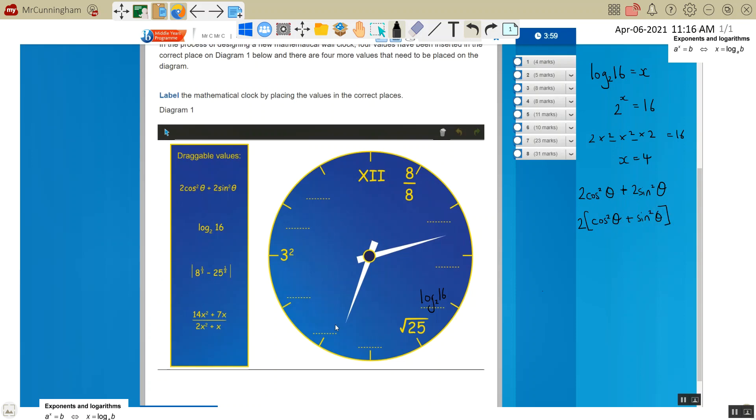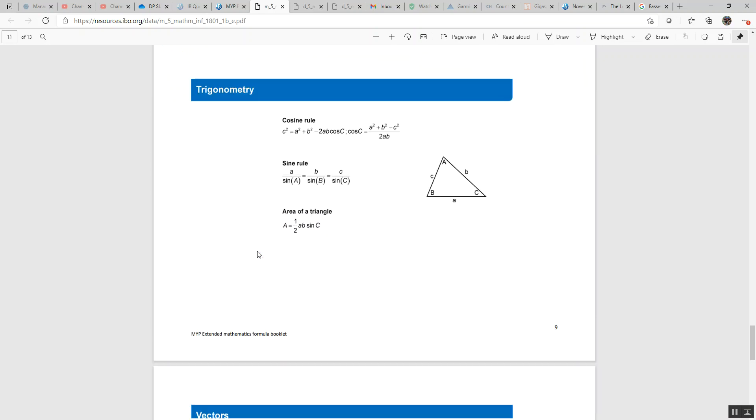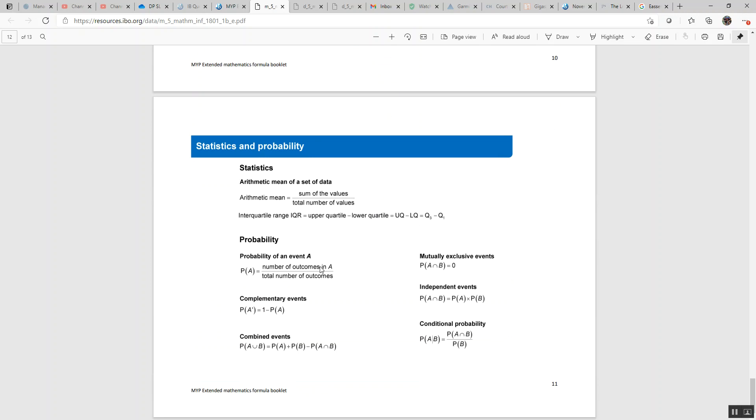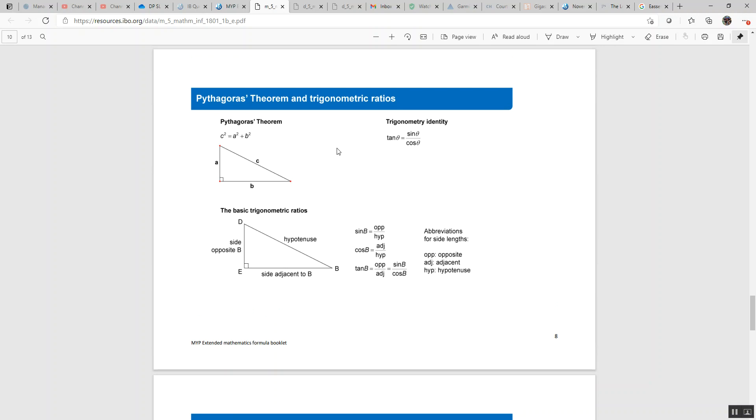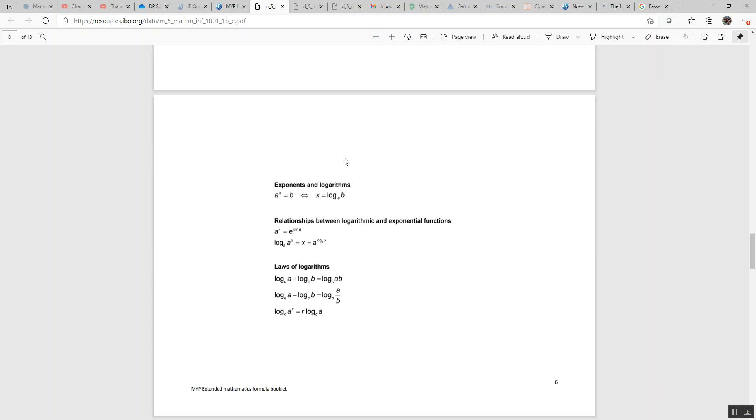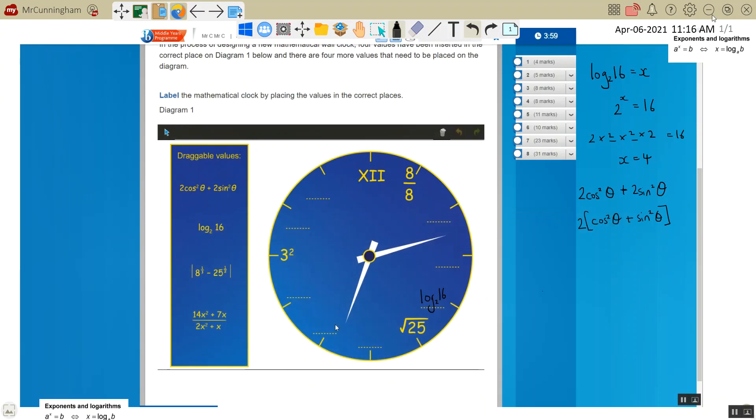So that's just factorizing. And then again, using your formula booklet, all this information is in here. So please make sure you know where it is. It's a form of the Pythagoras theorem. But hopefully you remember that cos squared plus sine squared is equal to 1. So this is just 2 times 1, which is 2. So this would go in here, 2 cos squared theta plus 2 sine squared theta.